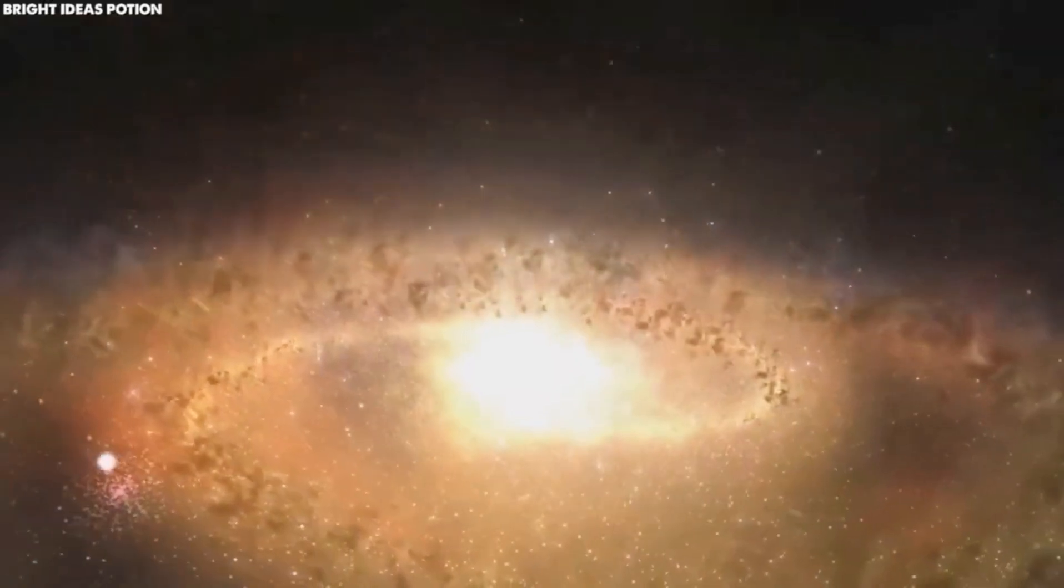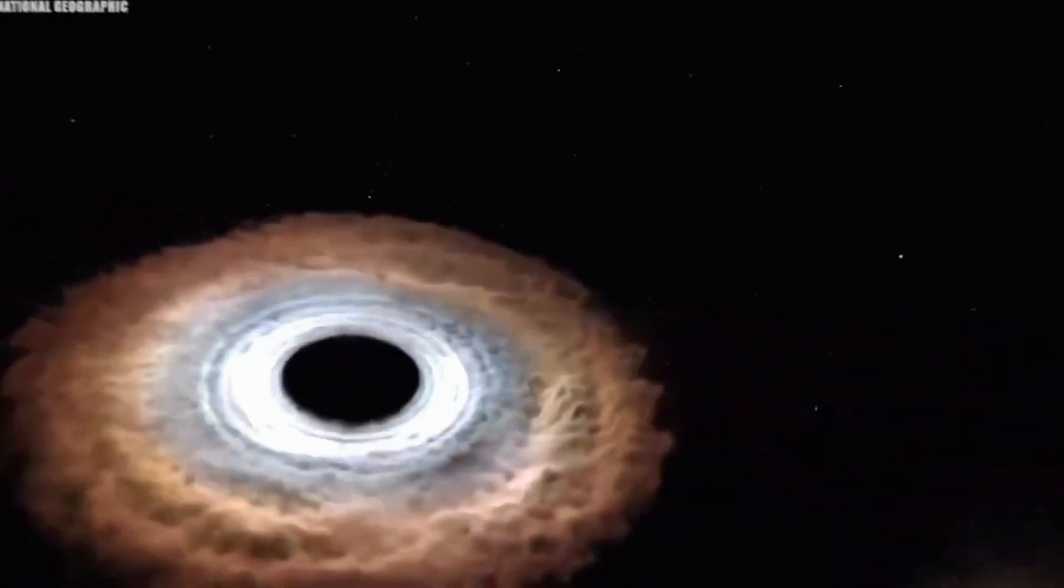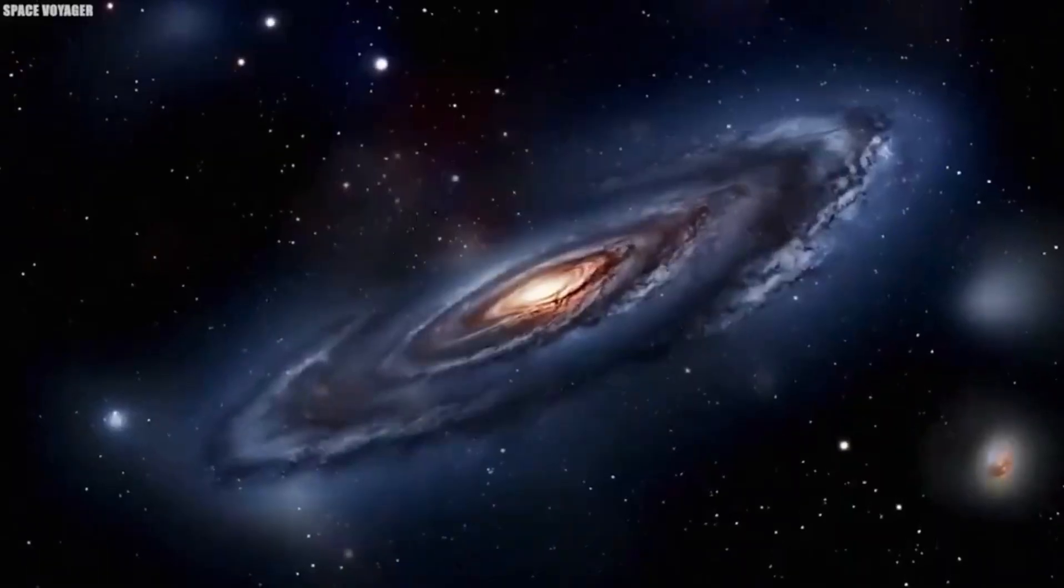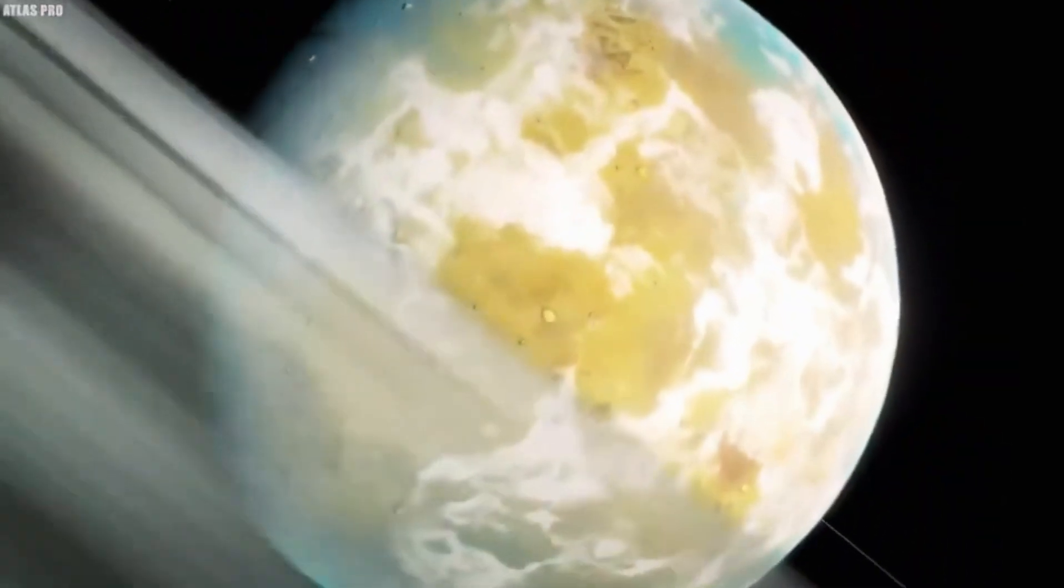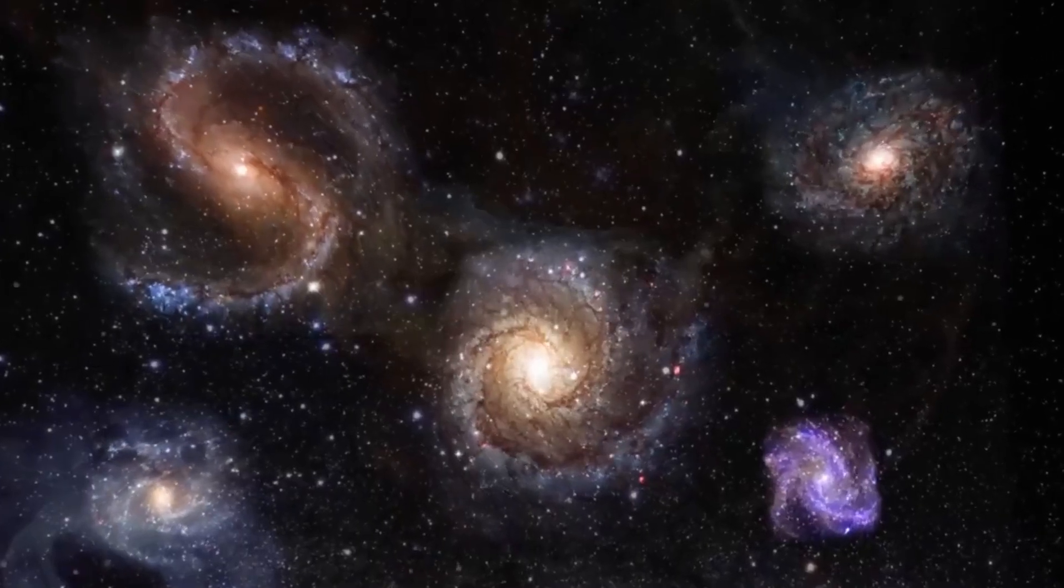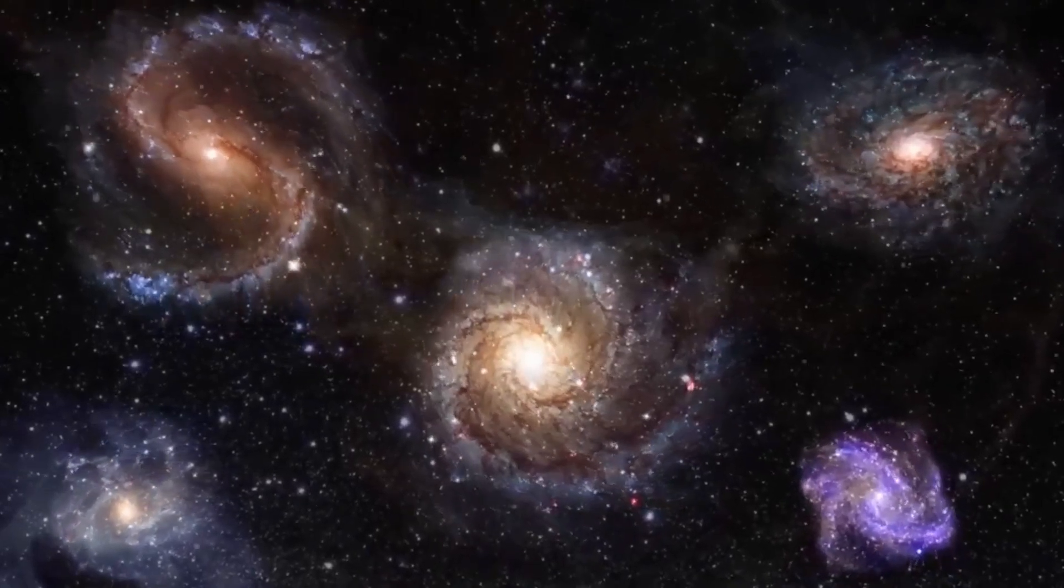Unlike Hubble, Webb detects traces of light in the infrared range. With its instruments, the telescope collects every trace of light, no matter how small, and assembles these minimal impulses into incredible images after hours of exposure time.